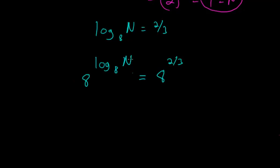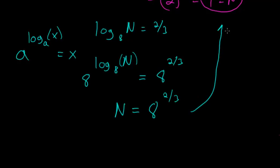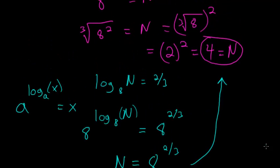And on the left here we can apply the logarithmic rule that a raised to the log base a of x is just equal to x, whatever is inside this logarithm. So here 8 raised to the log base 8 of n would just be equal to n. So again n is equal to 8 to the 2 thirds power which we figured out before is just 4.